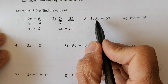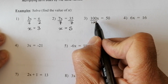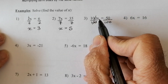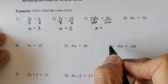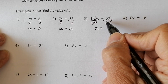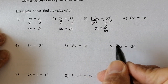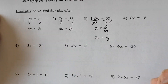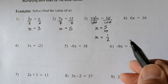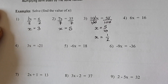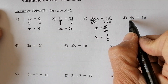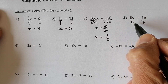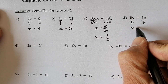Now some fractions: 100x equals 50. I divide the left-hand side by 100, and I must divide the right-hand side by 100 as well. 100 divided by 100 gives 1, leaving 1x, and 50 over 100 simplifies — divide both by 10 to get 5 over 10, and simplify further to get x equals one half. I'll leave it as a fraction. Next, 6x equals 16. Dividing both sides by 6 gives 16 over 6, which simplifies by dividing by 2 to give x equals 8 over 3. I'll leave it as a top-heavy fraction.